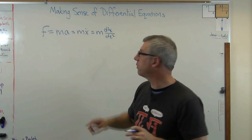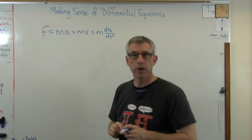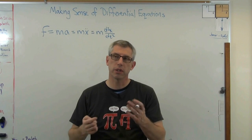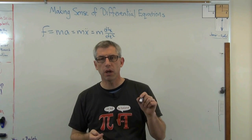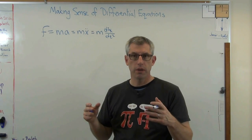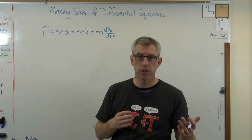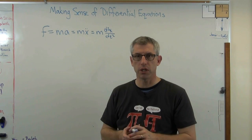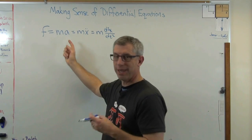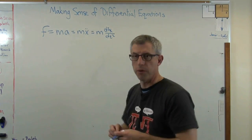Newton intended it to be a differential equation because he knew that force was not going to be constant. He was looking at the force between the sun and planets. Since planets travel in ellipses, the distance between the planet and the sun is always changing. The force is a function of distance, so the force is always changing. M and A can't be just numbers — at least one of them has to be a function.